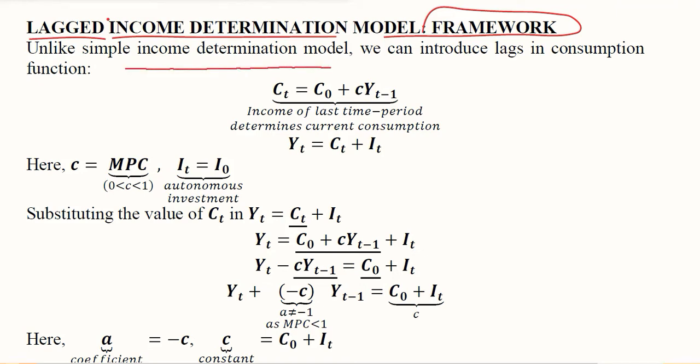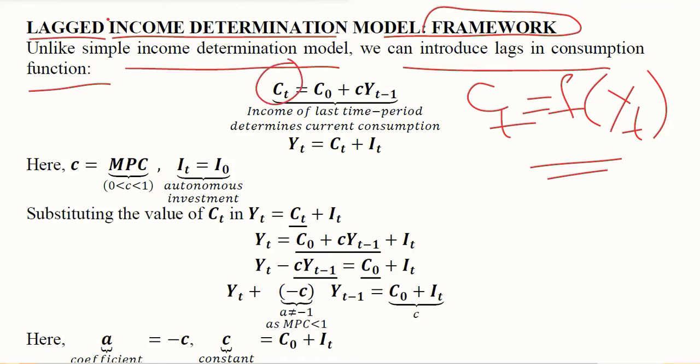Unlike the simple income model, we can introduce lags in the consumption function. Usually we consider that consumption of the current time period is a function of income of the current time period. However, a more realistic picture would be that current consumption is a function of the previous year's income—that is, income of the last period determines current consumption.